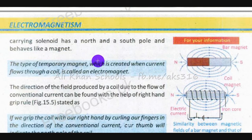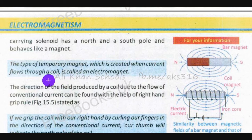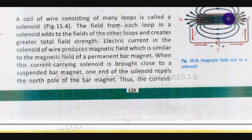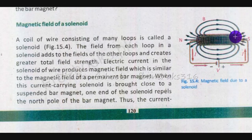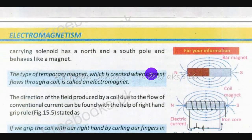A type of temporary magnet which is created when current flows through a coil is called an electromagnet. Electromagnet basically ek temporary magnet hota hai aur sirf uss waqt magnet banta hai jab uske andar se current guzar raha hota hai — jaise solenoid thi jo humne abhi previous example mein dekhi — woh ek electromagnet hai.